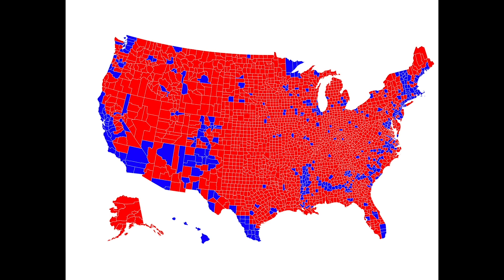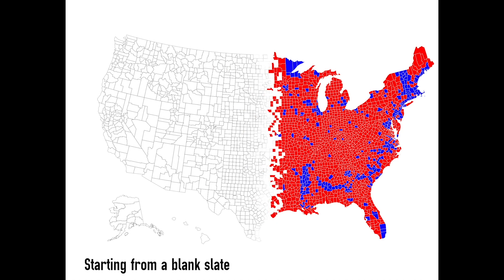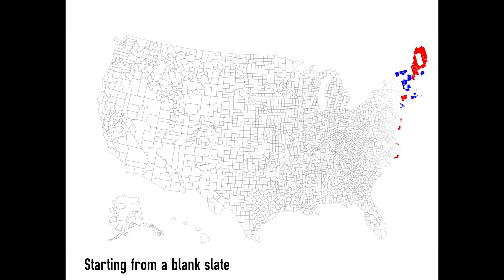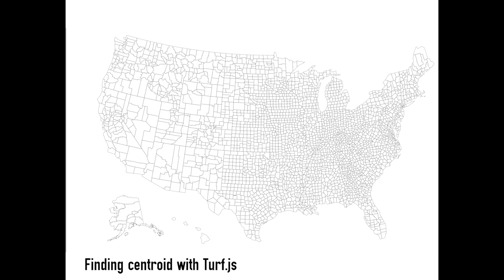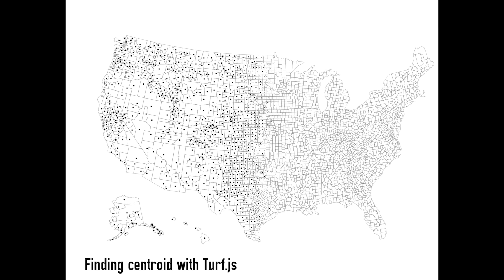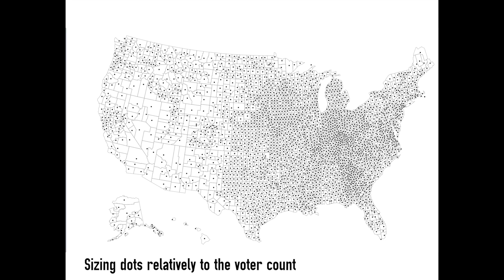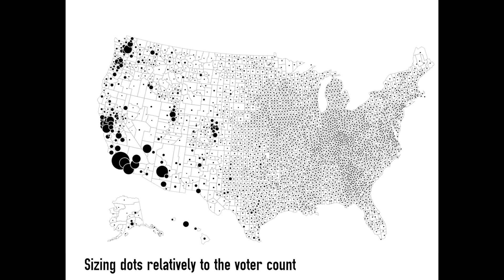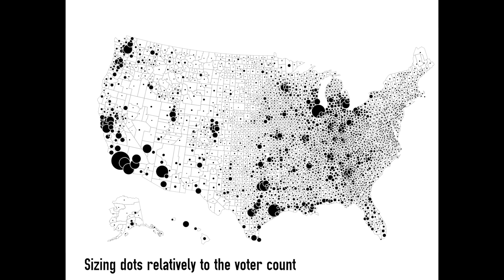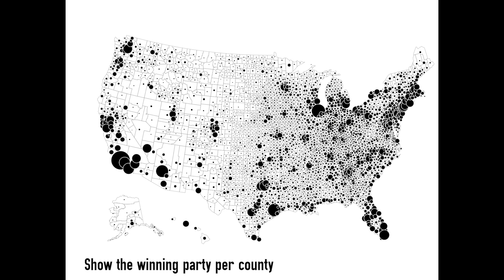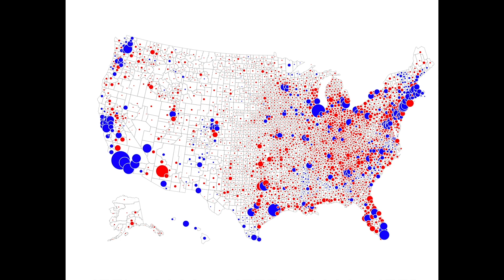Starting from that original map, I decided to remove the color encoding of the counties but keep their boundaries in order to start from a blank slate. Then using turf.js, an advanced geospatial JavaScript library, I computed the centroid of each polygon associated to each county and simply drew a point right at it. Since my initial idea was to provide a better reading of the election in terms of population, I started scaling the dots according to their associated voting count, using a square root scale of the voting count to compute the radius of each bubble. Then I reapplied the color of the winning party in each county representation — and that's where I told myself this is going in the right direction.